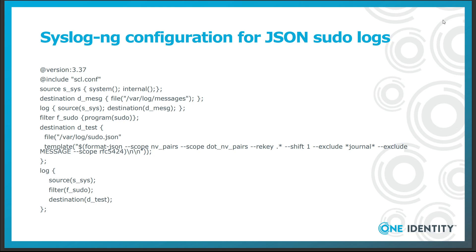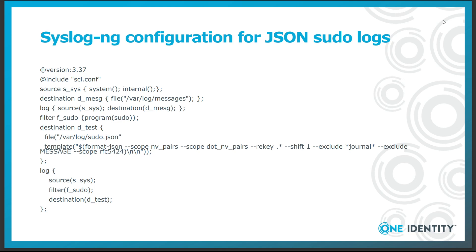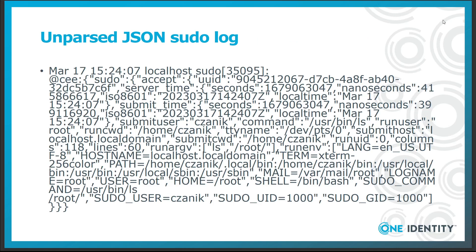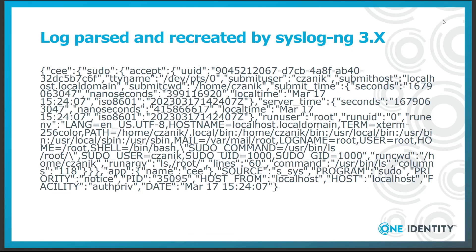Two newlines at the end make the files more human readable. Using this configuration, if you run sudo, you will find the JSON formatted log message in /var/log/messages. Now take a look at what syslog-ng can recreate from the original JSON message. JSON sudo logs are automatically parsed by syslog-ng, which is why you do not see a parser declaration in the above configuration. The JSON template function then tries to recreate the log message from the name-value pairs.